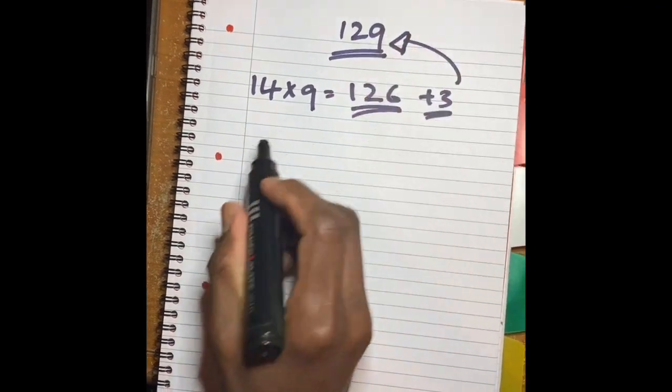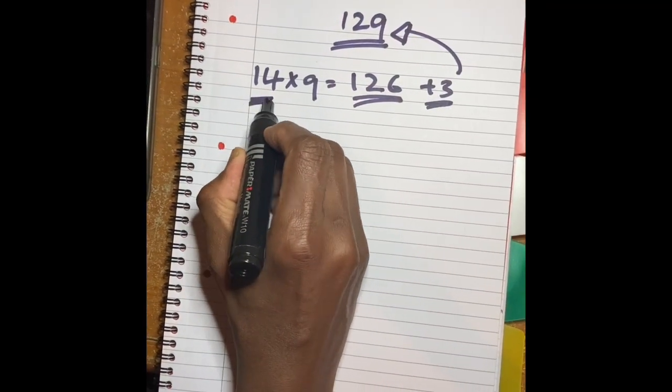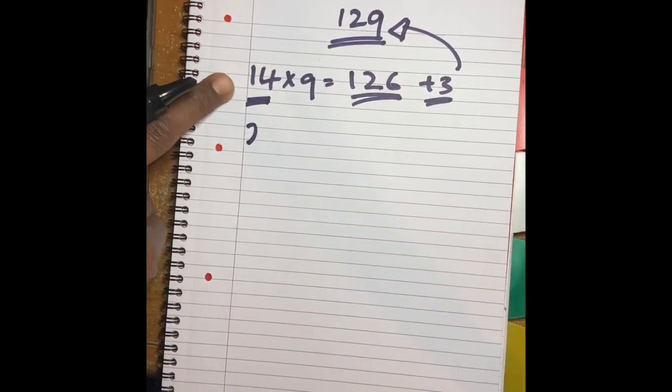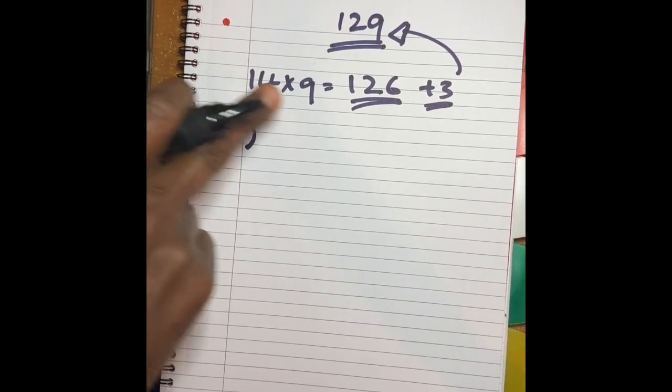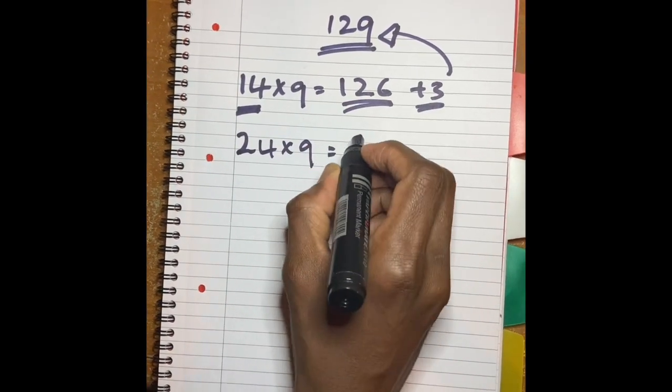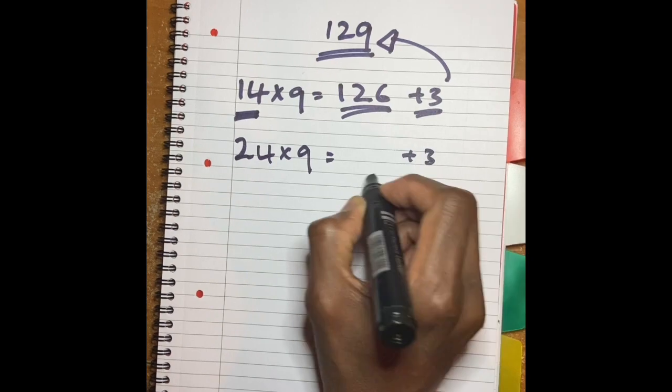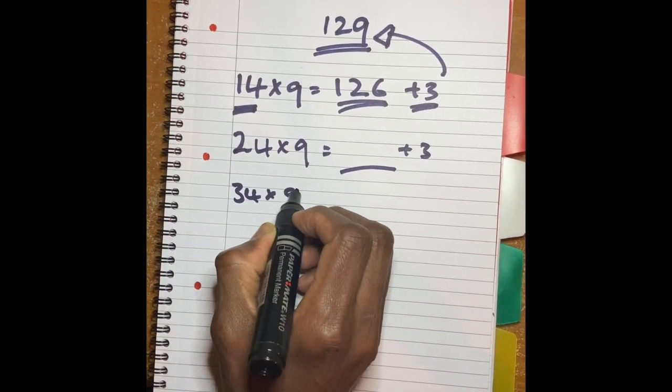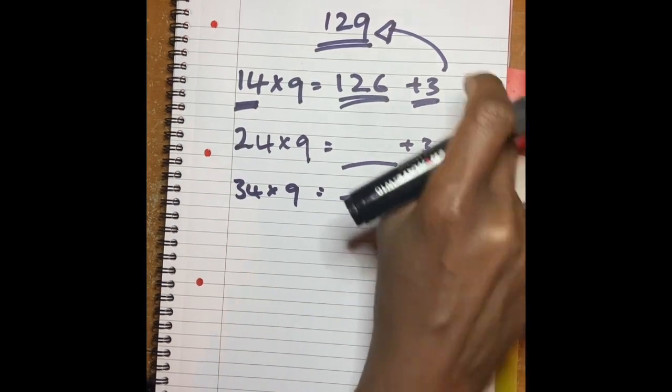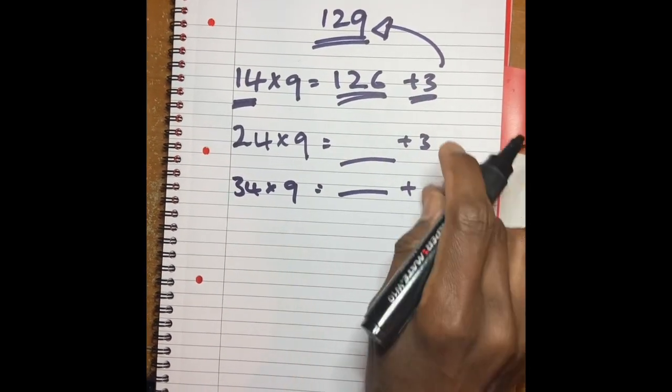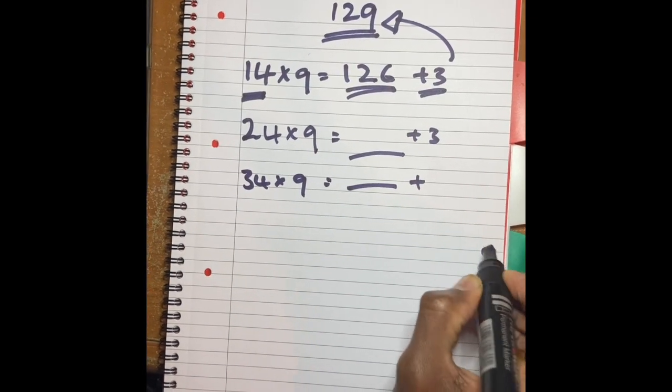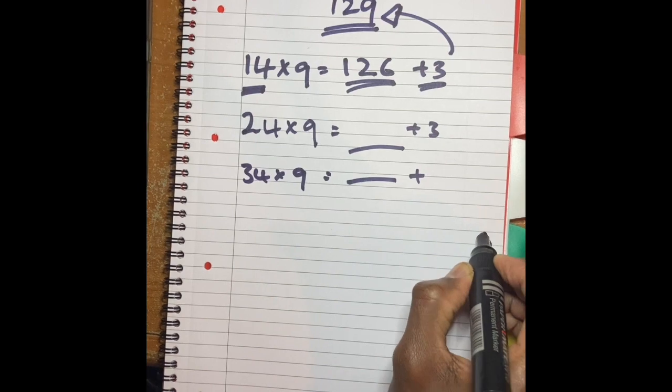So have a look here. We got 14. If you use exactly the same, but just if you increase that number by 10, it's going to work. Twenty-four times nine, wherever you get the result, plus three. Thirty-four times nine, wherever you go, plus three, this is going to work. You're going to end up—whatever that times—your digit number is going to be nine. Sorry, your ones is going to be a nine, regardless of what's in the tens and the hundreds.